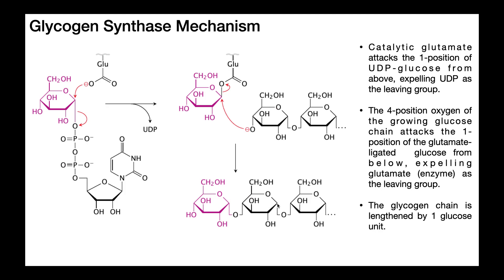And the same thing goes here. This glucose, its one position, is attached to the four position of the previous glucose in the chain. So that explains the 1 to 4. Now, the question is, why do we have this alpha in these alpha 1 to 4 linkages?